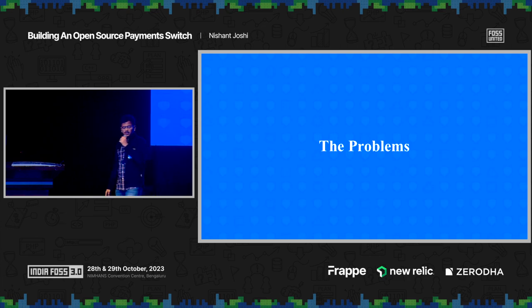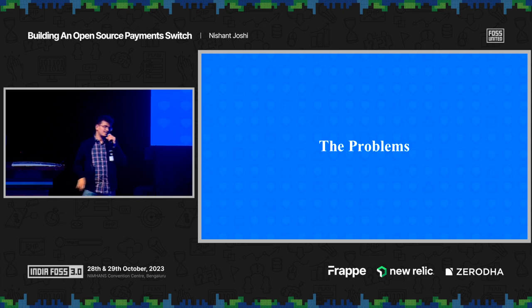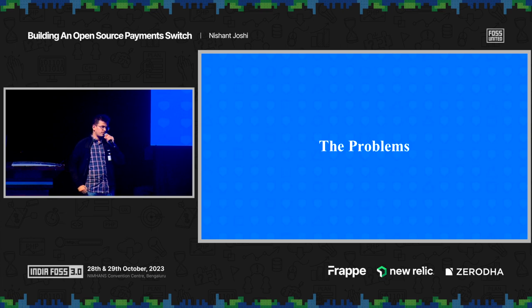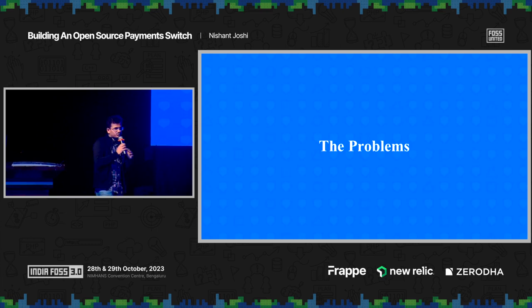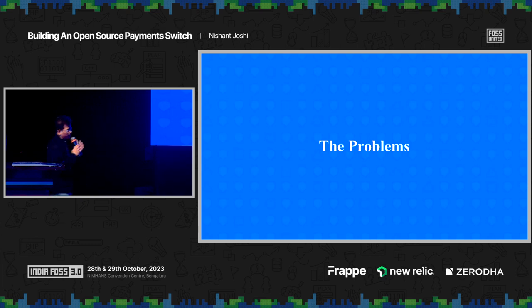In the following slides, I'm going to talk about a few problems that we currently face in the payments ecosystem and how we try to solve them using some of the approaches we went with in Hyperswitch.